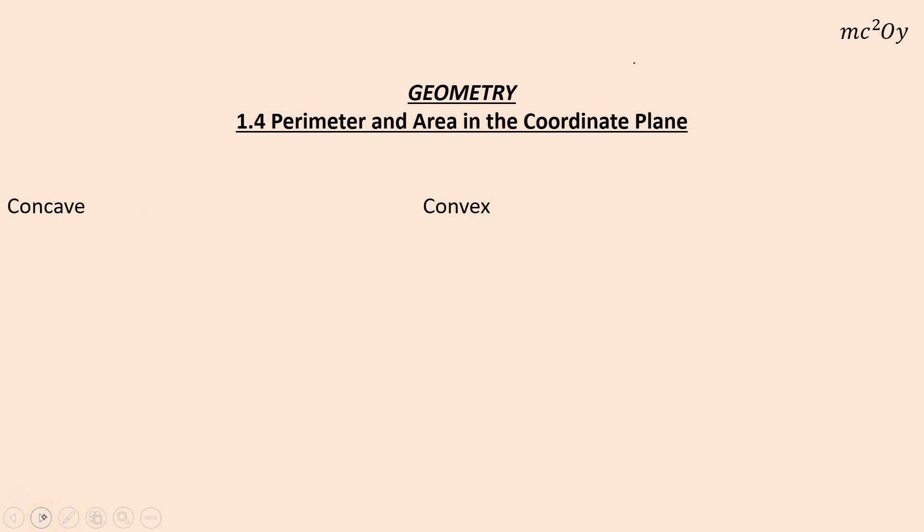The other thing we need to know is the words convex and concave. If you have a hard time drawing polygons, just put some dots and connect them. This shape has one, two, three, four, five sides. Notice if I take and draw from any one vertex to another vertex a line that is not a side.